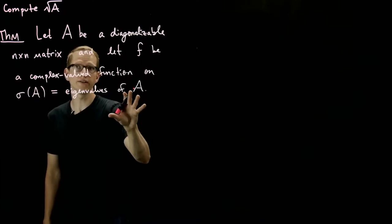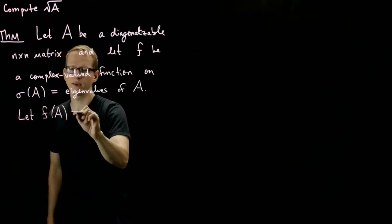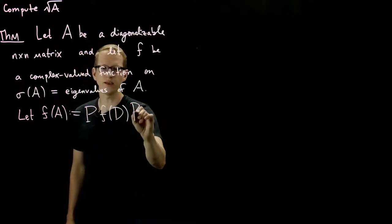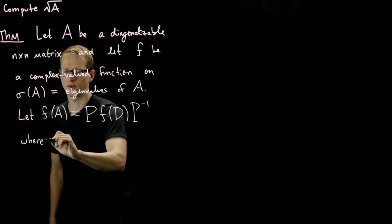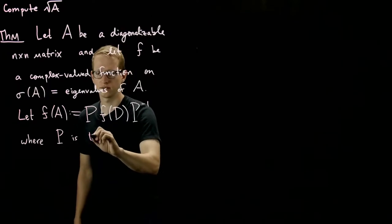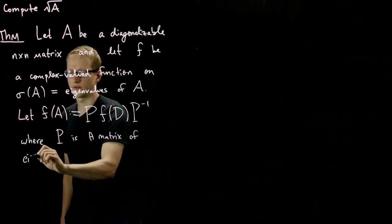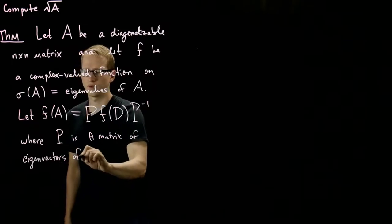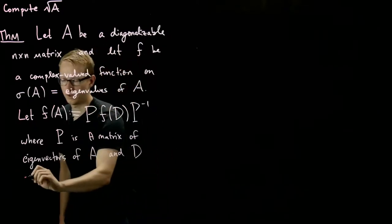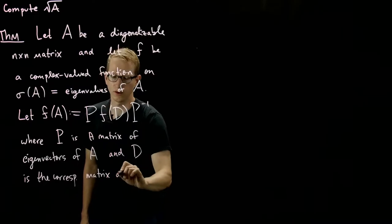Now, if we have this setup, we can already define what F(A) is. So F(A) is going to be defined as P*F(D)*P^(-1), where P is a matrix of eigenvectors of A written as columns, and D is the corresponding matrix of eigenvalues.